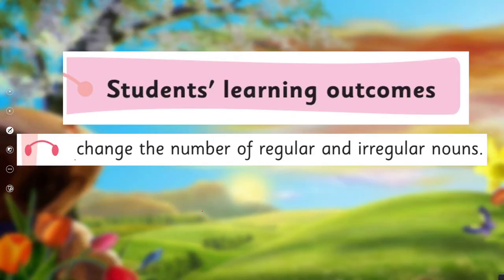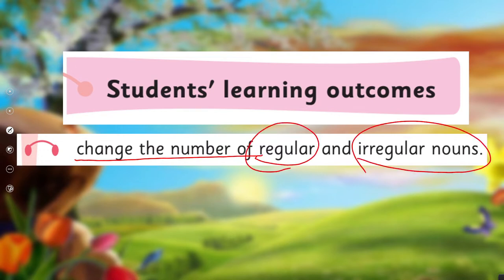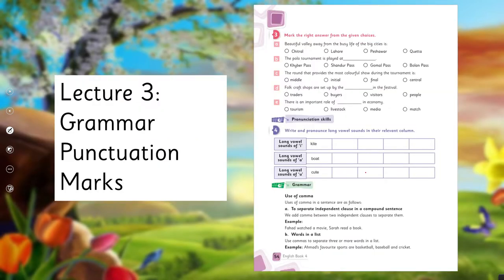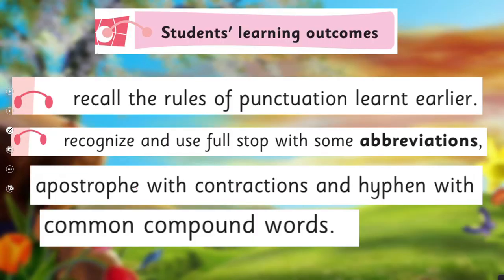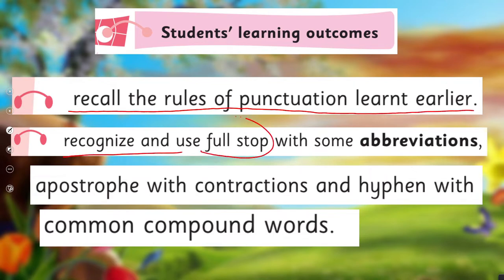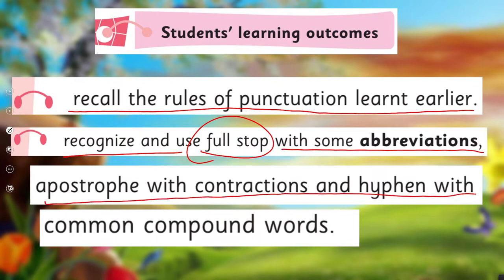We'll cover the SLO to change the number of regular and irregular nouns. In Lecture 3, under the title of grammar, we'll learn about punctuation marks. We'll cover the SLO to recall the rules of punctuation learned earlier, and recognize and use full stop with some abbreviations, apostrophe with contraction, and hyphen with common compound words. Apostrophe and full stop with abbreviations will be our focus for this lecture.